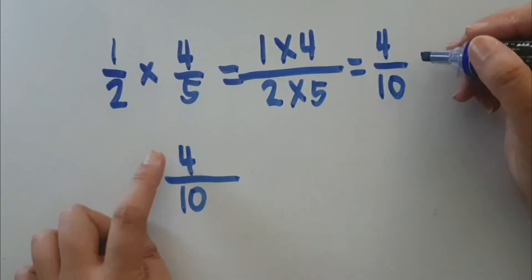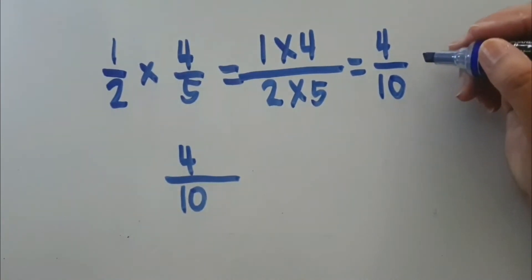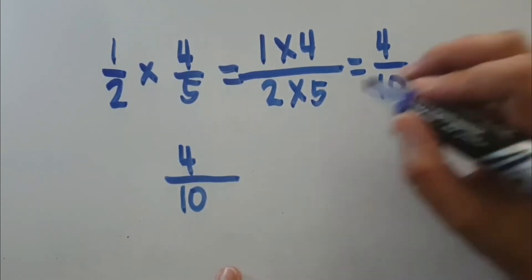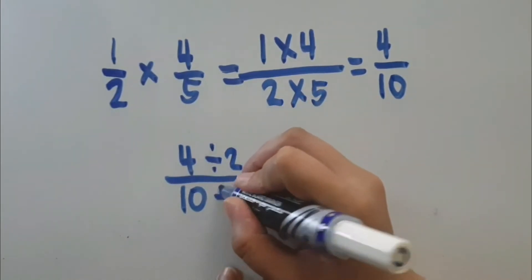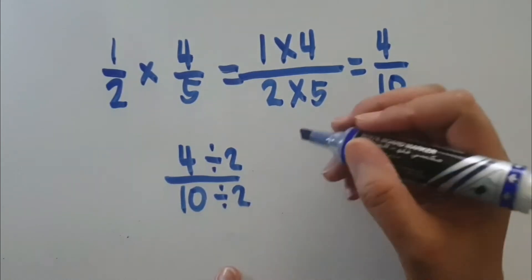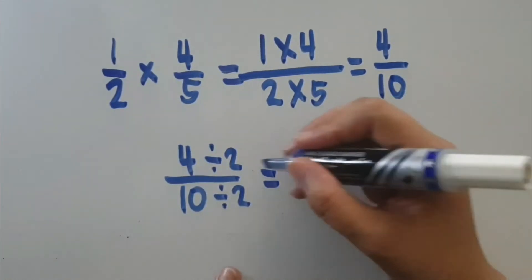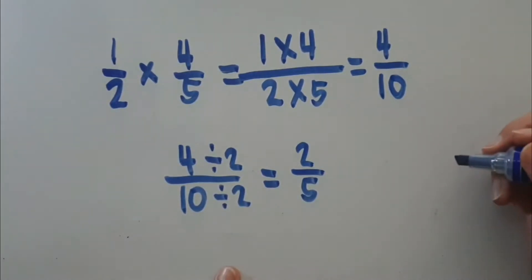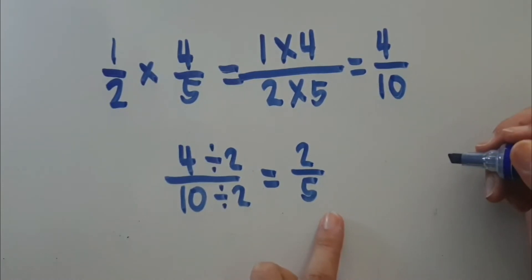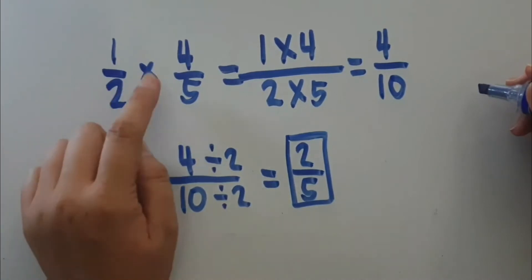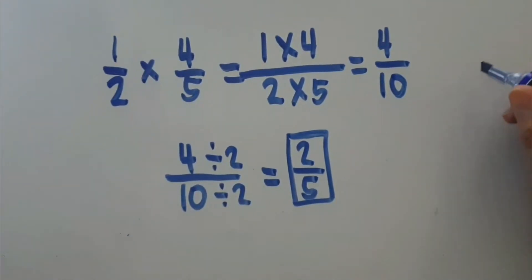Get the GCF of 4 and 10 so we can simplify this fraction. The GCF of 4 and 10 is 2. So, the numerator will be divided by 2 and the denominator will be divided by 2 as well. 4 divided by 2 is 2, and 10 divided by 2 is 5. That means the simplest form is two-fifths. So, one-half times four-fifths is equal to two-fifths.